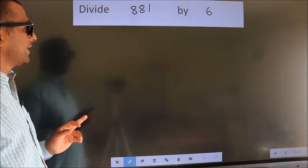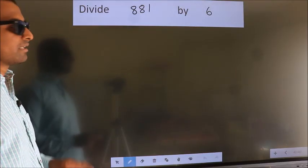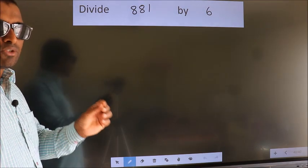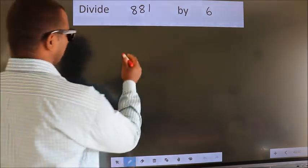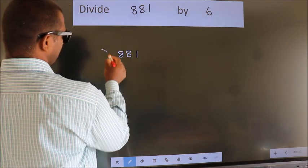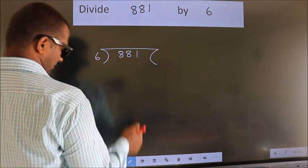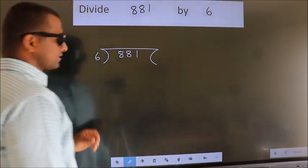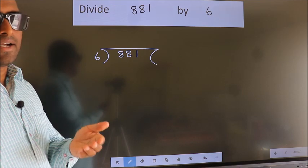Divide 881 by 6. To do this division, we should frame it in this way: 881 here, 6 here. This is your step 1.